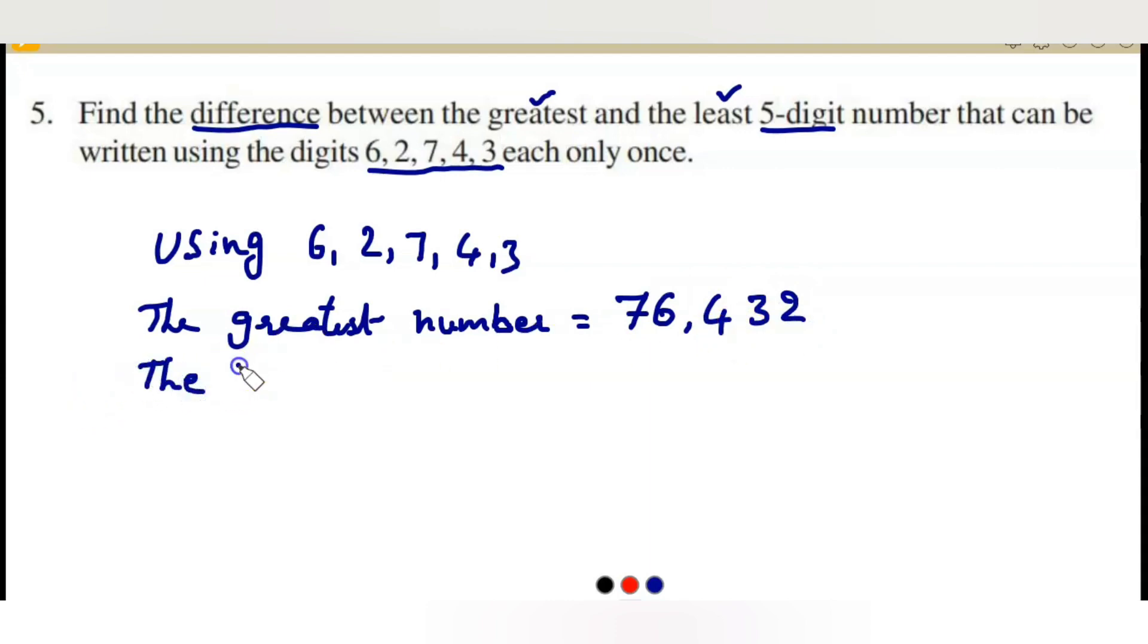Next comes 6 and go on in descending order, 76,432. This is the greatest number using these digits. Now find the least number also using those digits. The least number starts with the least digit 2, next go to highest in ascending order. 2, 3, just reverse to the previous number, 2, 3, 4, 6 and 7.